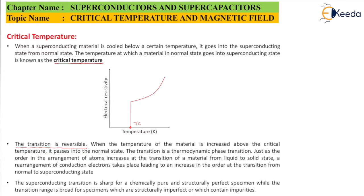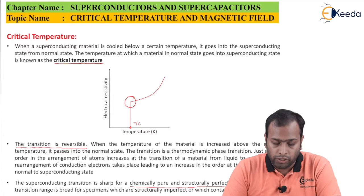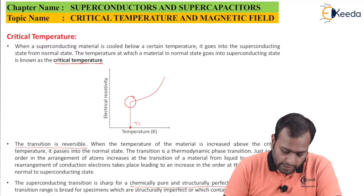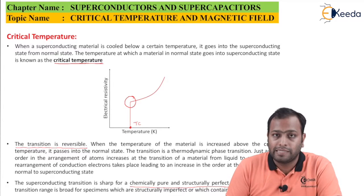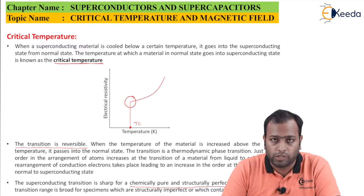The superconducting transition is sharp for a chemically pure and structurally perfect specimen. This is very important. The sharpness that you can see here is an ideal situation wherein the material is chemically pure, which means it has no impurities, and structurally perfect, which means its structure has no defects.